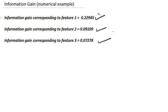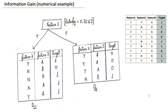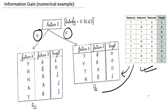Since the information gain corresponding to Feature 1 is the highest, we select Feature 1 as our root node and split the dataset accordingly. Feature 1 has two distinct values, true and false. We subset the entire dataset into two subsets: D11, which occurs when Feature 1 is completely true, and D12, which occurs when Feature 1 is completely false. In each subset, Feature 2 and Feature 3 have distinct values, while Feature 1 can be omitted.